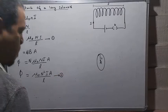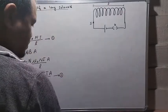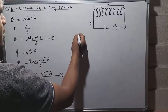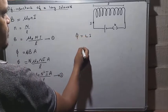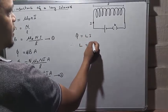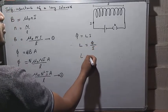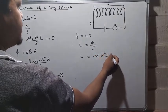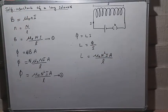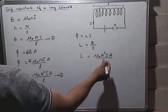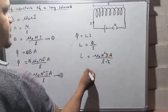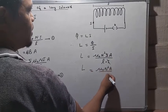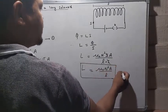This is equation two. Our aim is to find the self-inductance. We know that φ equals LI, so the self-inductance L equals φ/i. Substituting, L equals μ₀N²iA/(l·i). The i in the numerator and denominator cancel, so the self-inductance becomes L equals μ₀N²A/l.